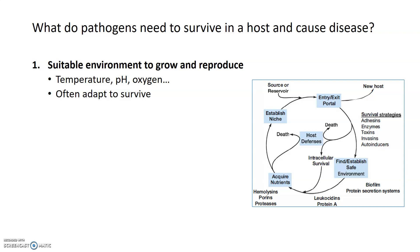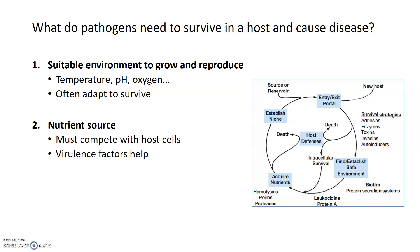Some pathogens that do that are ones that live inside your gut. In addition to needing a good environment, pathogens also need a source of nutrients. To get those nutrients, the pathogen will have to compete with the host cells. Specific substances or structures that the pathogen makes to help acquire nutrients are known as virulence factors — these will be discussed in more detail in the next half of this lecture.